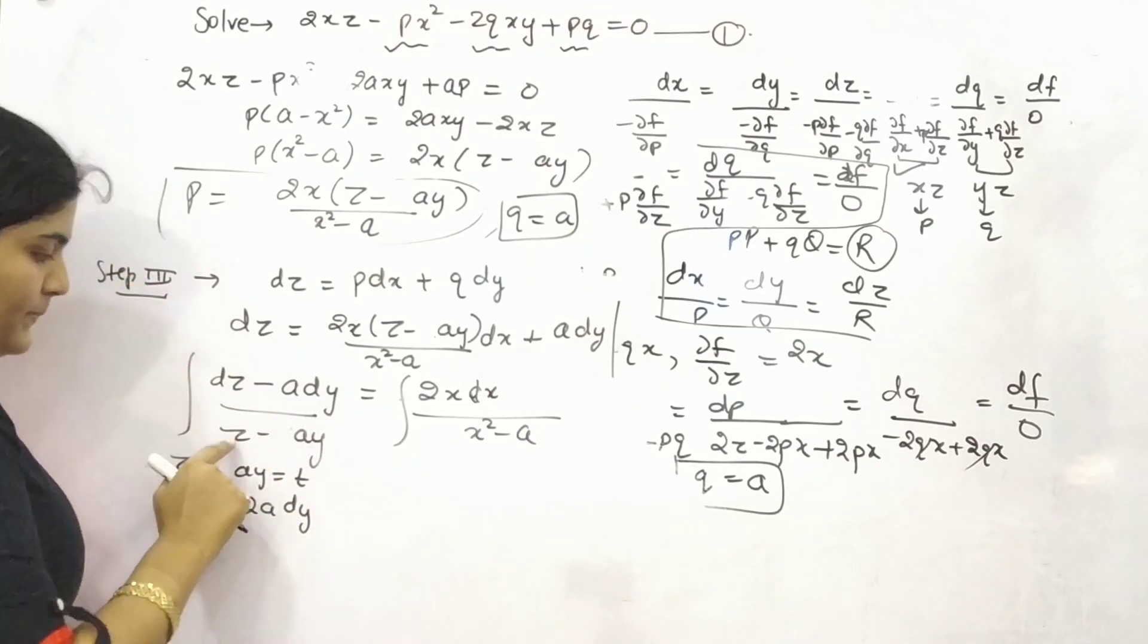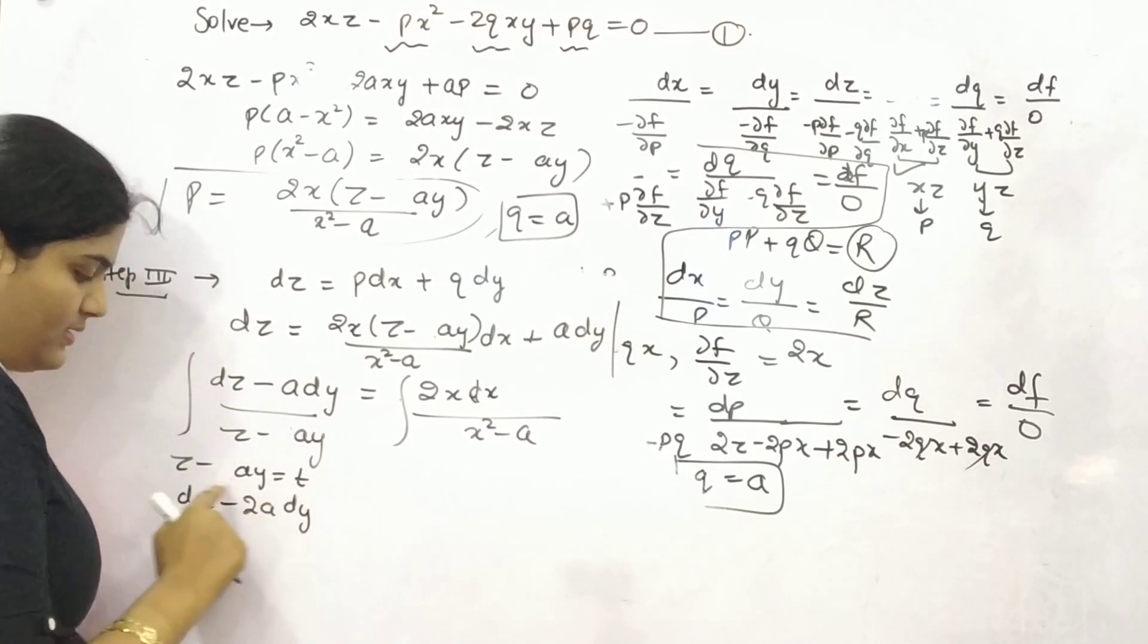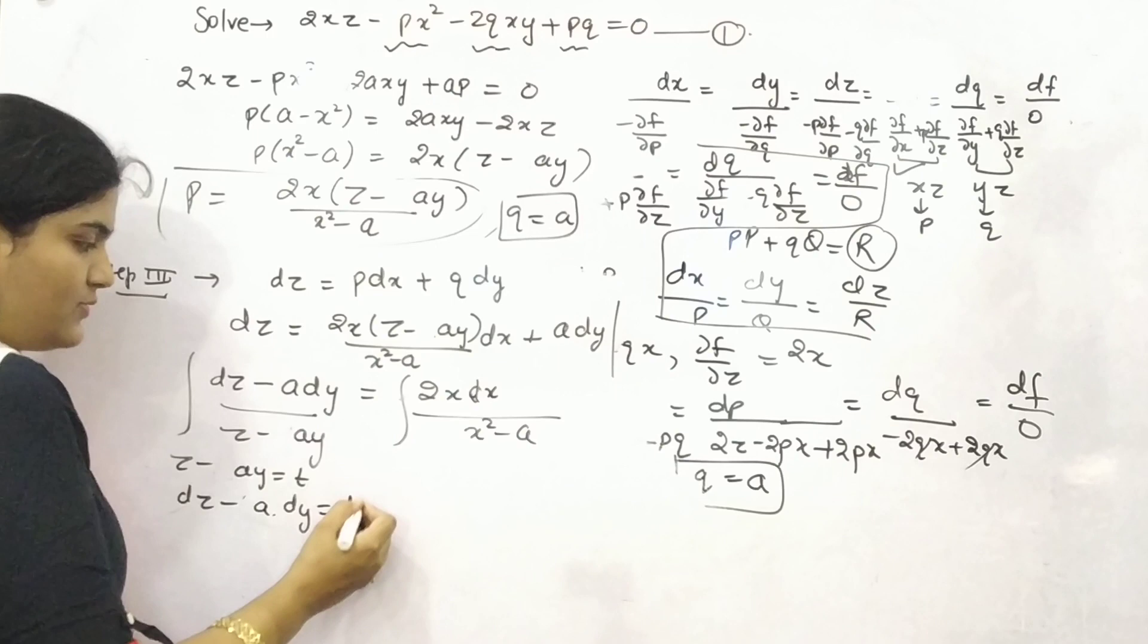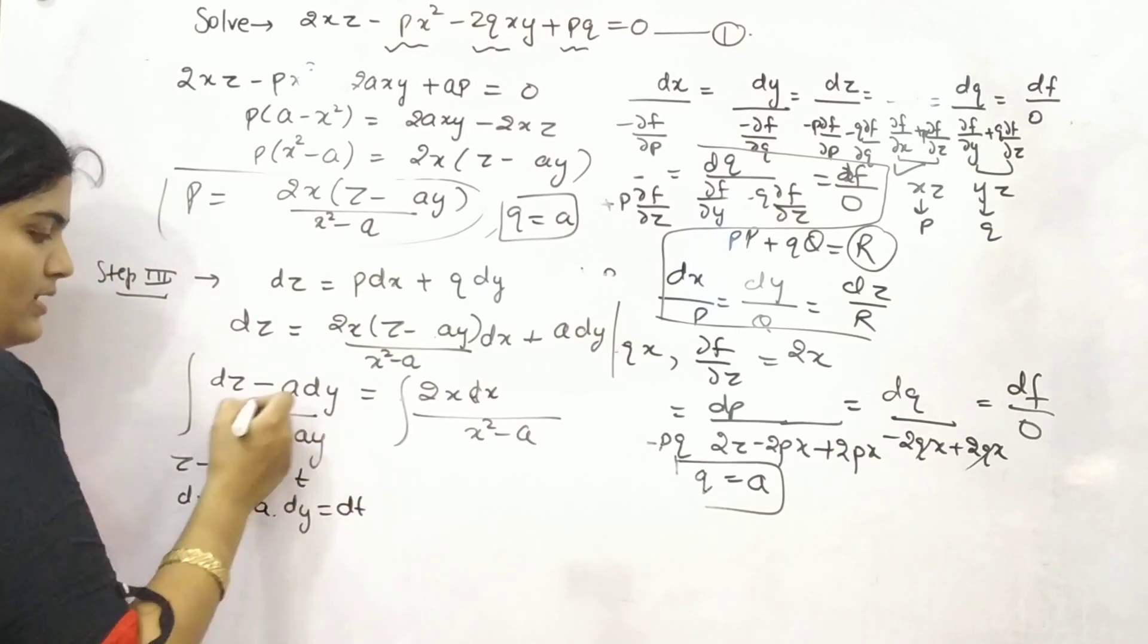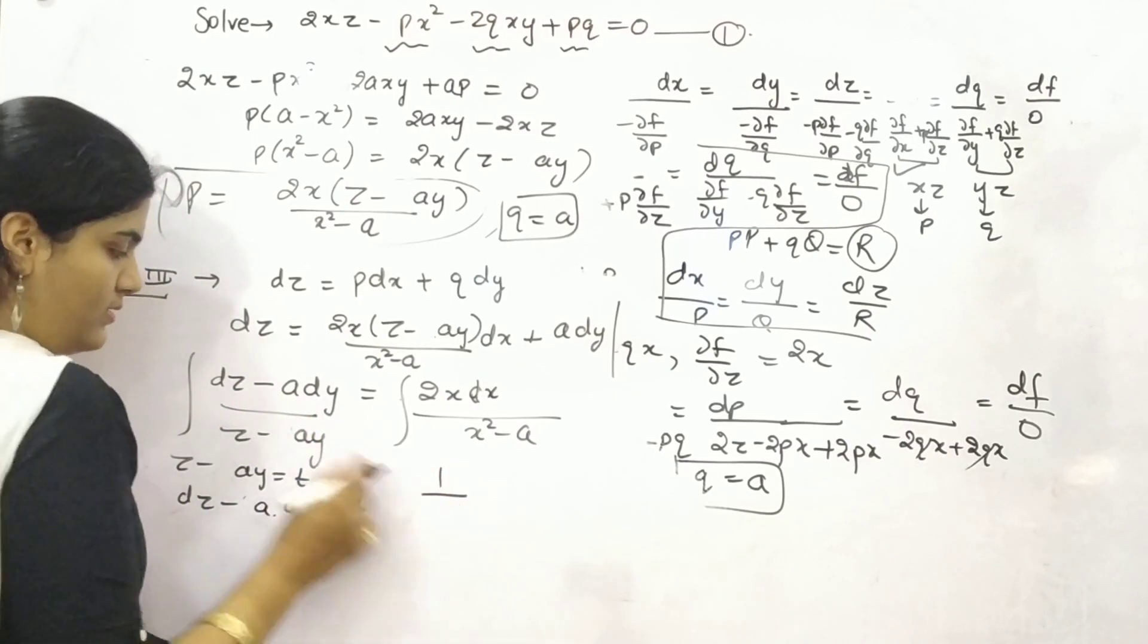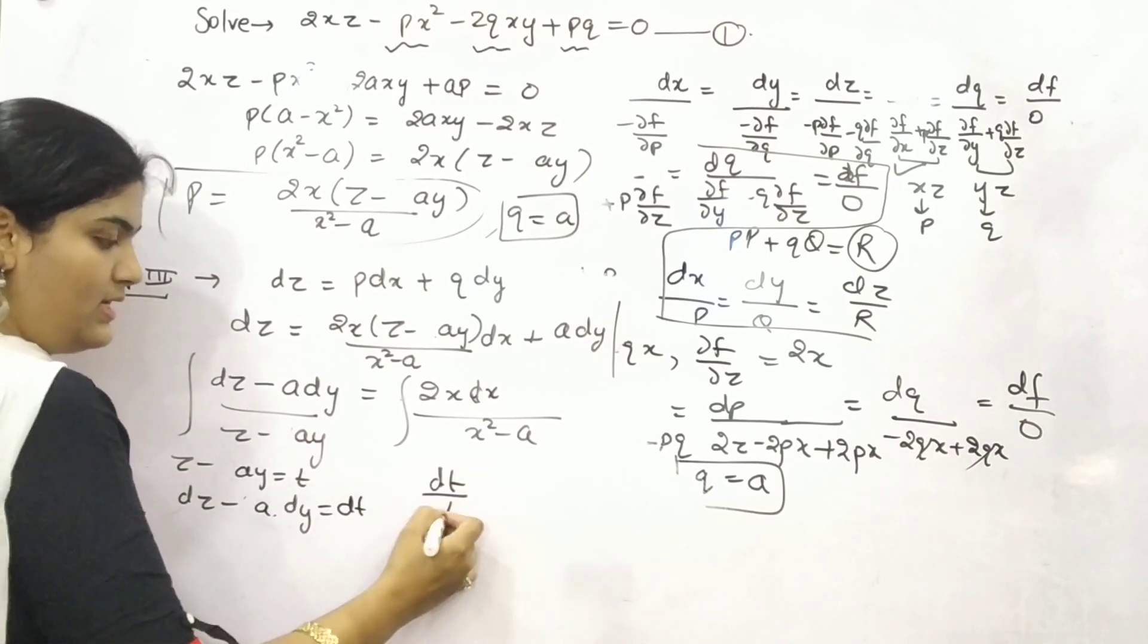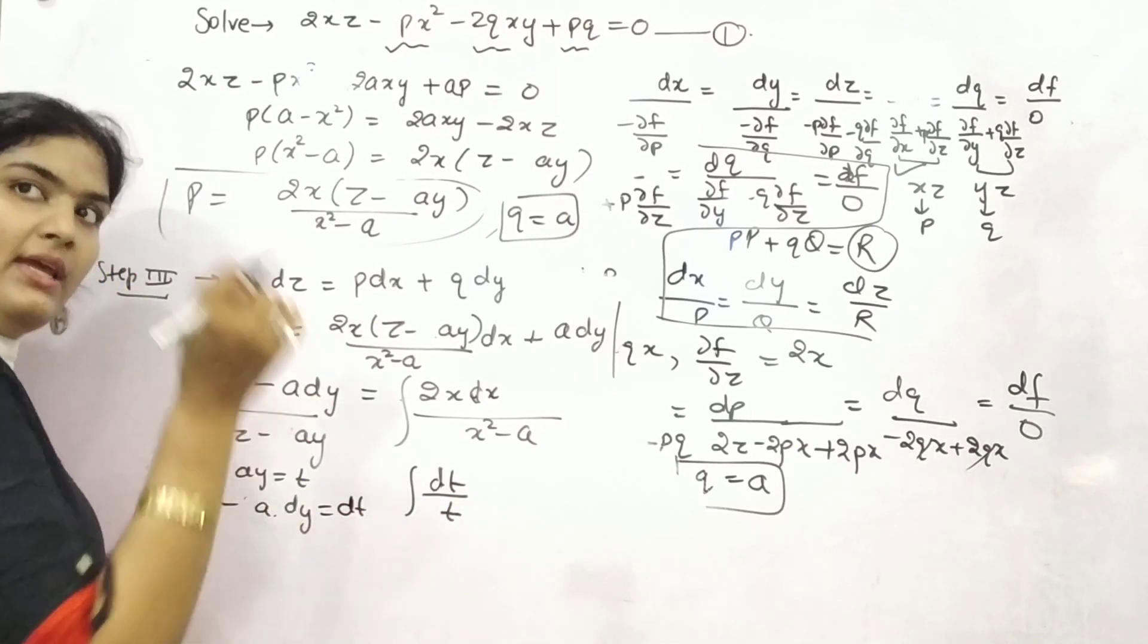Now, everything is sorted. So, now, if you take. You can see, you know, the integration of the function. If function is given in denominator and its derivative is in numerator, then the integration will be log of that function. Let me tell you how. Take denominator as t. Now, differentiate dz minus a dy is equal to dt. So, you can see. This is your dt and this is your t. So, if you integrate, what it will be? Log t.